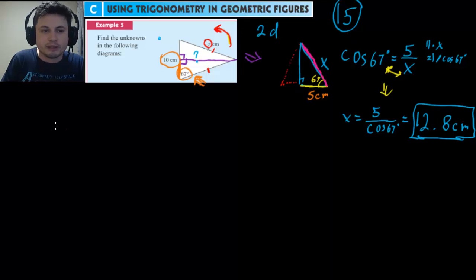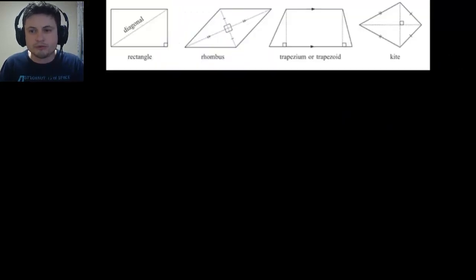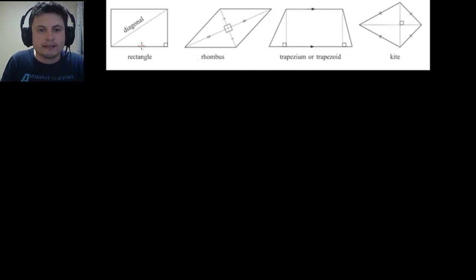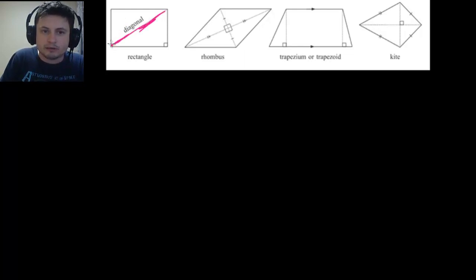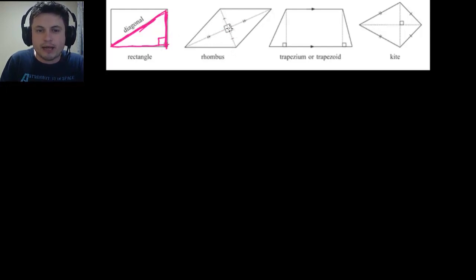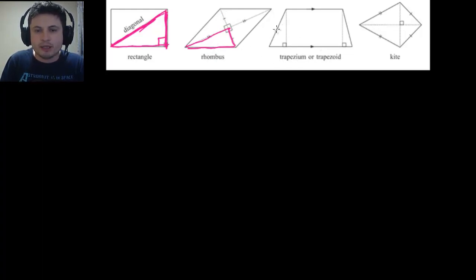Now let's look at the various possible problems you'll see on a test. All of these figures have right triangles inside them. For a rectangle, you can find a right triangle by drawing a diagonal, giving you a right triangle you can work with using sine, cosine, and tangent. For a rhombus, the diagonals cross to create four right triangles, and all four are congruent.